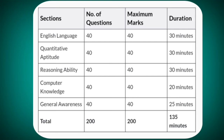Sections: General Awareness — Number of Questions: 40, Maximum Marks: 40, Duration: 25 Minutes. Total Number of Questions: 200, Total Maximum Marks: 200, Total Duration: 135 Minutes.